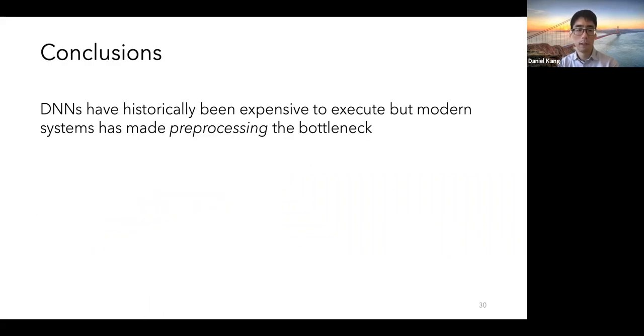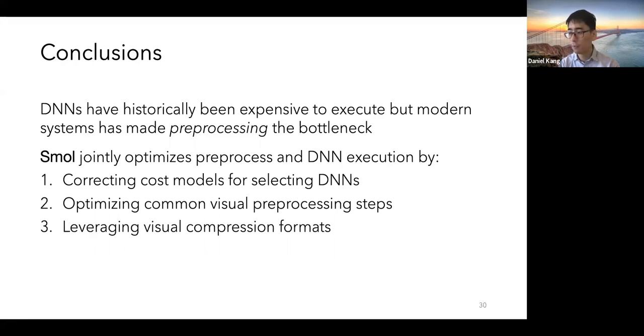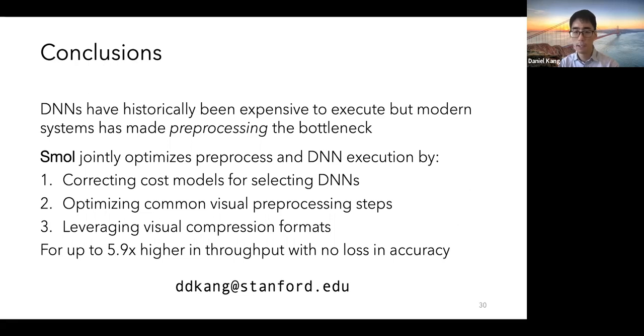In conclusion, DNNs have historically been expensive to execute, but modern systems have made pre-processing the bottleneck. Smol jointly optimizes pre-processing and DNN execution by correcting cost models for selecting DNNs, optimizing common pre-processing steps, and leveraging visual compression formats. We're up to 5.9 times higher throughput with no loss in accuracy. My email is here, and I'll be around to answer questions as well. Thank you for your time.